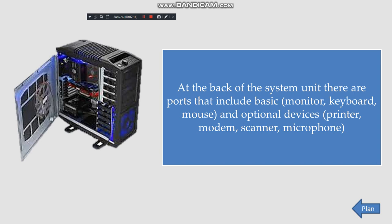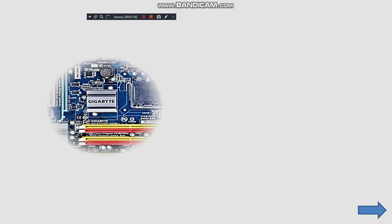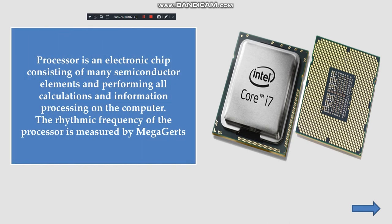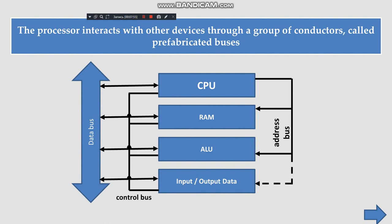The internal architecture of the computer includes the motherboard — a set of devices replacing various items with multiple connectors. The processor is an electronic chip consisting of many semiconductor elements and performs all calculations and data processing on the computer. The processor interacts with other devices through conductors called prefabricated buses.